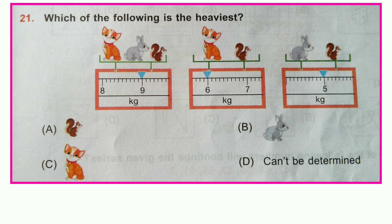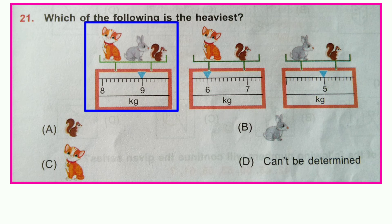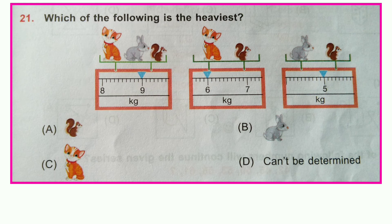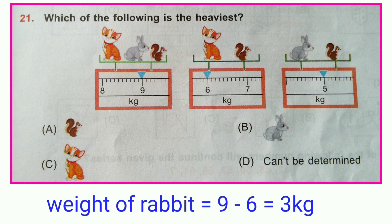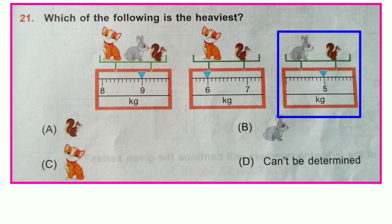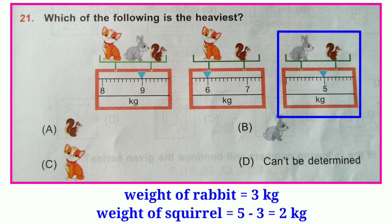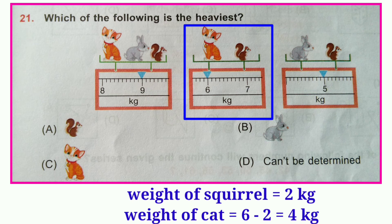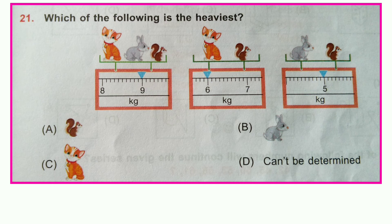Question number twenty-one: Which of the following is the heaviest? The sum of the weight of cat plus squirrel equals 6 kg. The sum of the weight of cat, rabbit, and squirrel equals 9 kg, so the weight of rabbit is 9 − 6 = 3 kg. The sum of rabbit and squirrel equals 5 kg, so squirrel = 5 − 3 = 2 kg. Weight of cat = 6 − 2 = 4 kg.